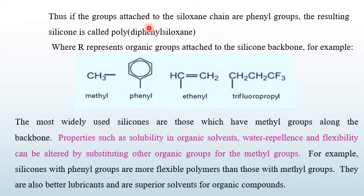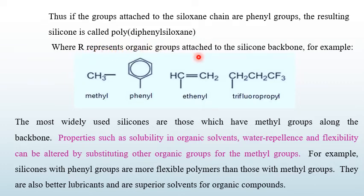If the group attached to the siloxane chain is a phenyl group, the resulting silicone is called poly-diphenyl siloxane. The R group in the siloxane unit represents the organic group attached to the silicone backbone. This R group can be a methyl group, phenyl group, ethanol group, or trifluoropropyl group.